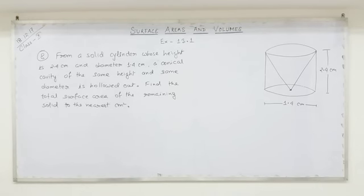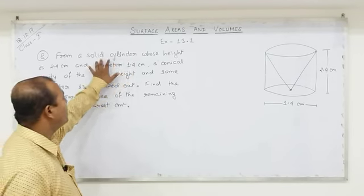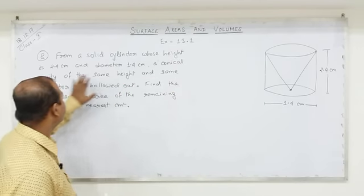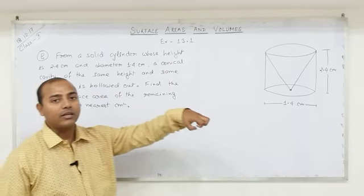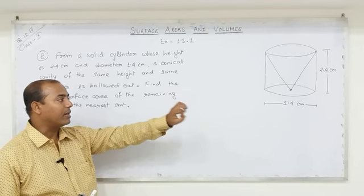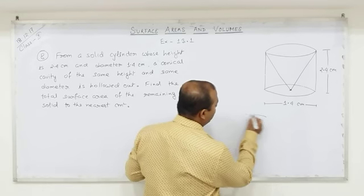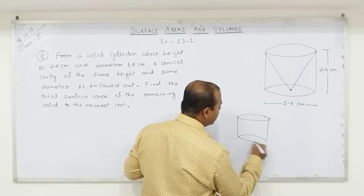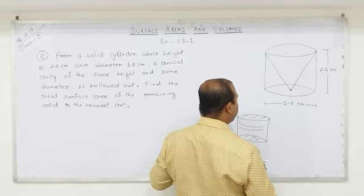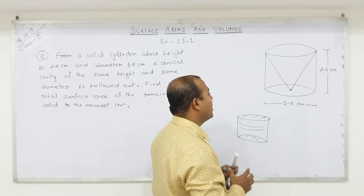Initially here we have a solid cylinder — a cylinder which is completely made of material with no empty space. After that, a conical cavity is formed, meaning material in the conical shape is removed. So the cylinder originally has three faces: two circular and one curved. But when the conical cavity is formed, the conical shape is removed, so the upper face is also removed.